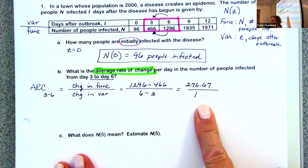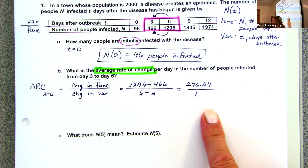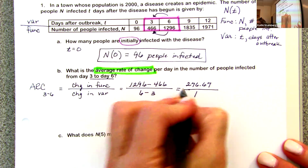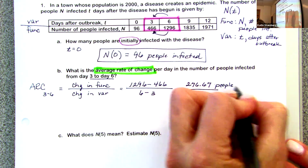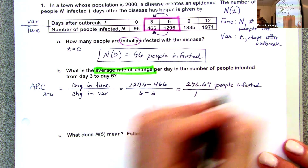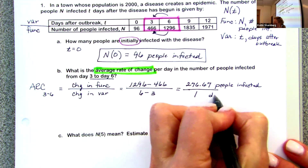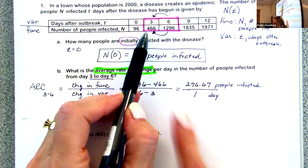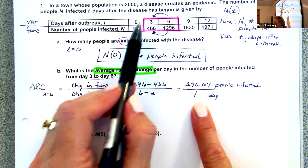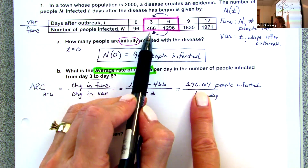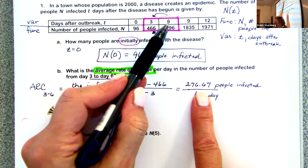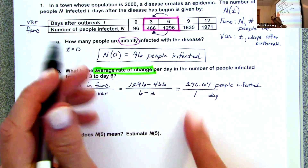If you give me just the number on a test, I'll give partial credit, but I expect you to label. The top number is your change in function — people infected. The denominator, 6 minus 3, is your variable — that's one day. So from day three to six, 276.67 people are infected per day. If I wanted people infected on day four, I'd take 466 and add 276.67; day five, add it again; day six, add it again, and it should be close to 1,296.